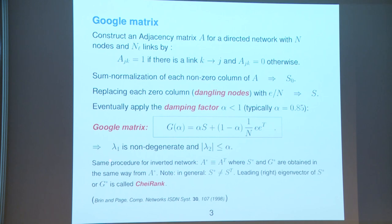After applying the damping factor, the leading eigenvalue is no longer degenerate and the PageRank algorithm converges well. It is also possible to apply the same procedure to the inverted network by replacing the adjacency matrix with its transpose, giving matrices S* and G*, which we call CheiRank. This is introduced in the classic Google paper by Brin and Page as the original idea.